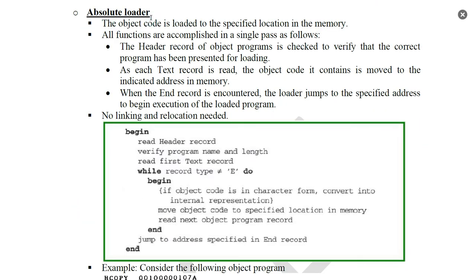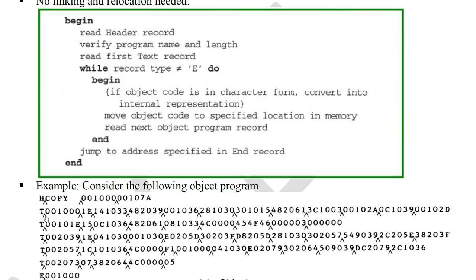Absolute loader loads object code into a specified memory location. For example, consider an object program with a header record, five text records, and an end record. In the text record, we have the first address, then size, then object code one by one, then end of line. These object codes will be loaded into memory.